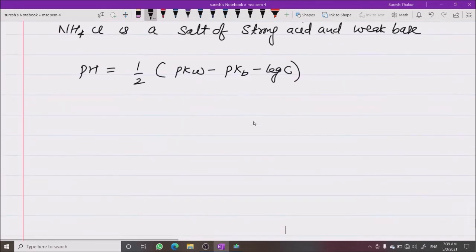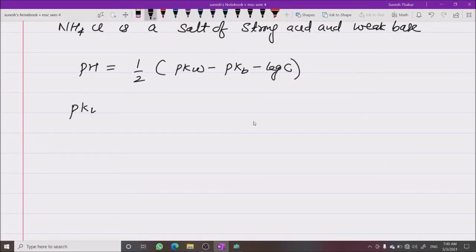pKw has a standard value of 14 at 298 Kelvin. Now for pKb, to calculate pKb, we know that pKb is minus log of Kb.